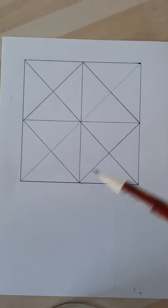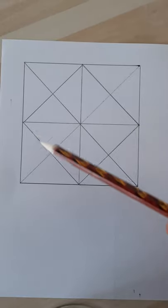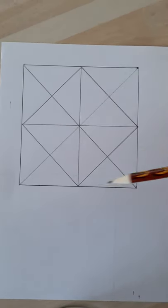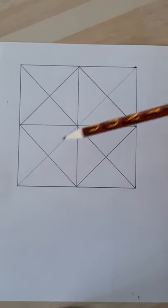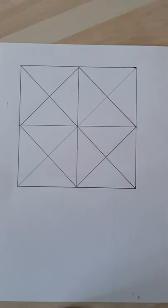So as you can see now we've got what looks like a box within a box, a square within a square. We can see lots of different shapes being formed here. We've got the beginnings of our Islamic art.